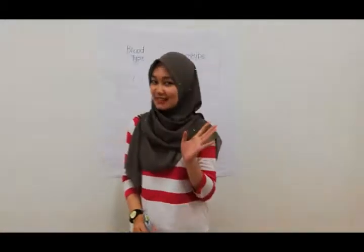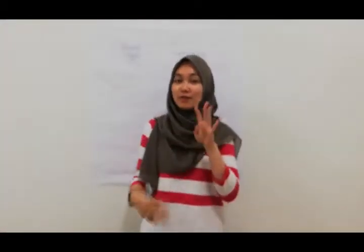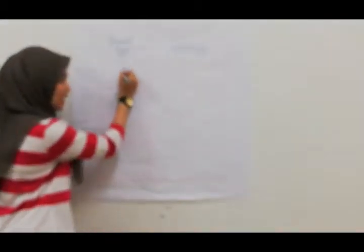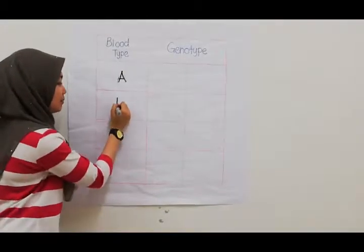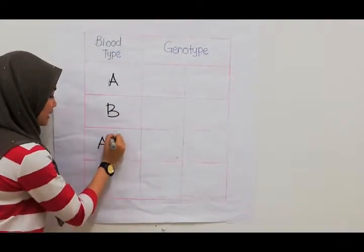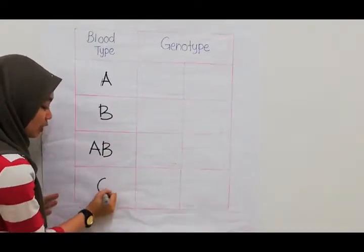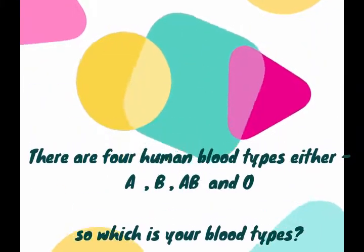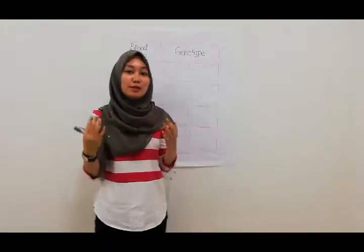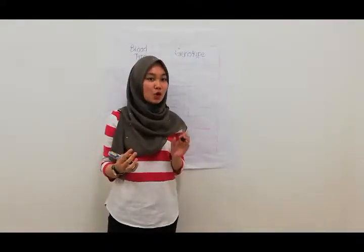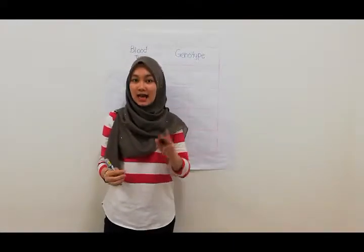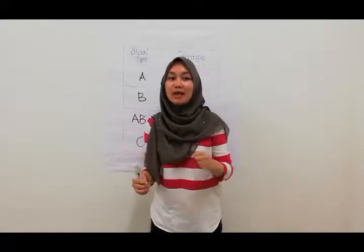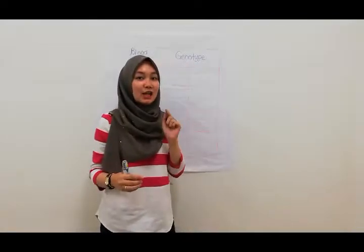Okay everyone. So we have four blood types which are blood A, blood B, blood AB, and blood O. Human blood type is determined by co-dominant alleles. There are three different alleles for human types which are IA, IB, and IO.